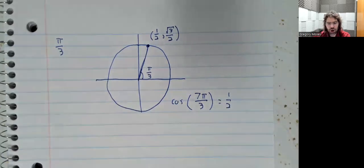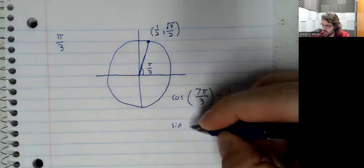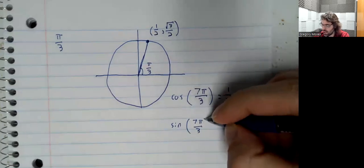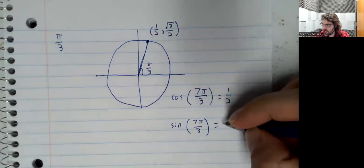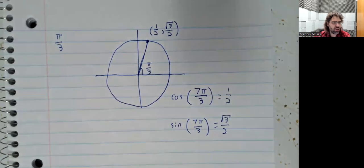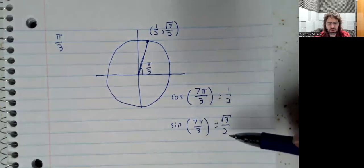So the cosine of 7 pi over 3 is also 1 half. The sine of 7 pi over 3 is also the square root of 3 over 2.